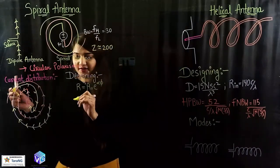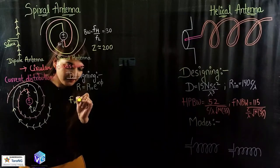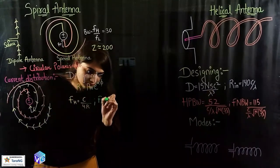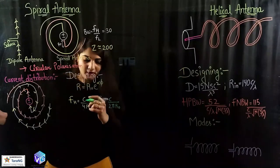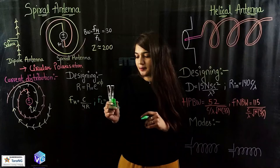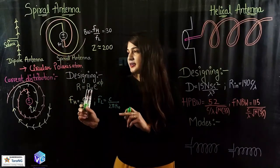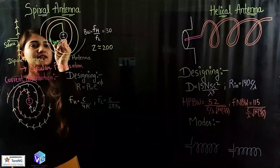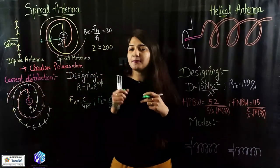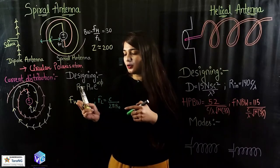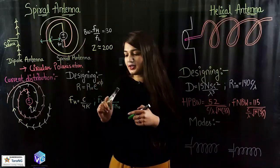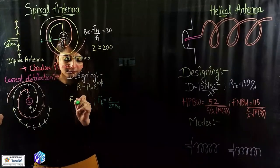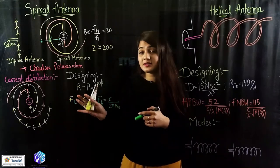We can find out FH and FL as well. FH is C upon 4R and FL is C upon 2πR₀, where R₀ is the smallest radius and R (or R dash) is the radius of the circumference — from center up to the circumference. So I can find out the lowest frequency as well as the highest frequency of operation. FH is the highest frequency and FL is the lowest frequency of operation.